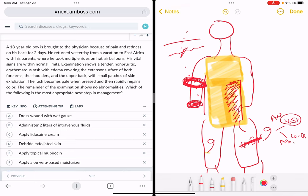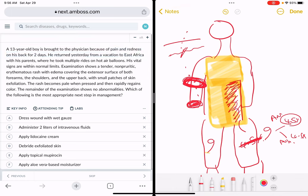Let's see if this patient really needs IV fluids. We have a 13-year-old boy coming in because of pain and redness on his back for two days. He returned yesterday from a vacation to East Africa with his parents. It's relatively self-explanatory—this guy had a sunburn probably where he took multiple rides on hot air balloons. Vitals are normal and stable. Tender erythematous non-periodic rash with edema covering the extensor surfaces. He's listing down the sun-exposed areas: extensor surface of both forearms, shoulders, upper back, and small patches of skin exfoliation.